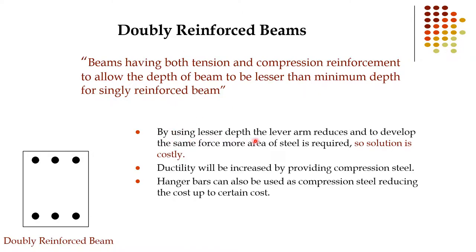By using a lesser depth, the lever arm reduces, and to develop the same force more area of steel is required, so the solution is costly. In the doubly reinforced beam, compression force acts at the top and tension force at the bottom; the distance between the two forces is the lever arm. As the lever arm reduces in the doubly reinforced beam, the couple force will reduce.